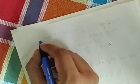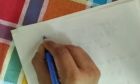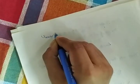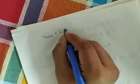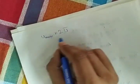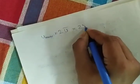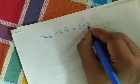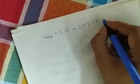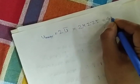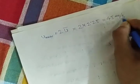You know u max equals 2 u bar. We already discussed this. So it will be 2 into 2.25, which is 4.5 meter per second.